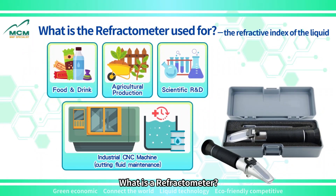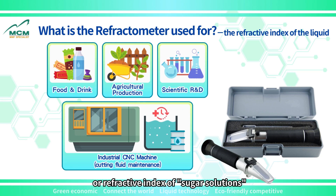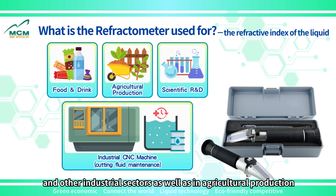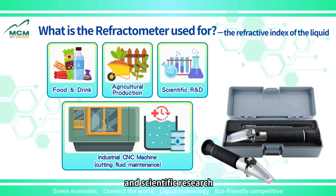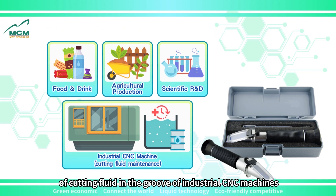What is a refractometer? A refractometer is used to quickly measure the concentration or refractive index of sugar solutions and other non-sugar solutions. It is widely used in sugar, food, beverage, and other industrial sectors as well as in agricultural production and scientific research. It plays an important role in the maintenance of cutting fluid in the groove of industrial CNC machines.